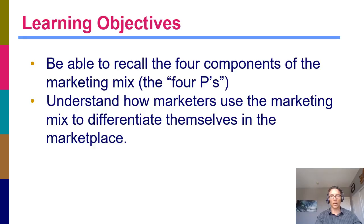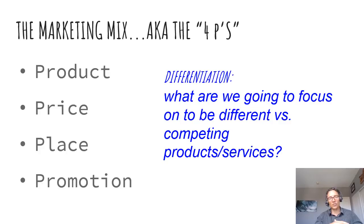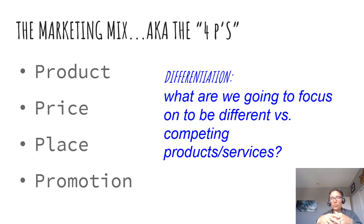On the left here you see the marketing mix, also known as the four P's: product, price, place, and promotion. Marketers are responsible for all four of these elements — coming up with products, pricing those products, determining where they're going to sell those products, and how they're going to promote them. The concept of differentiation is this: as marketers, we are going to focus on usually one of these marketing mix variables to make ourselves different and distinct from competitors.